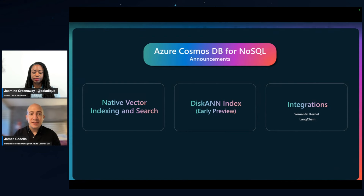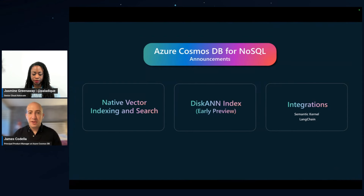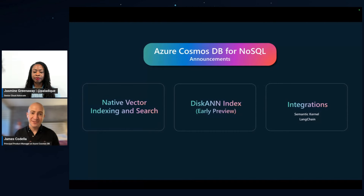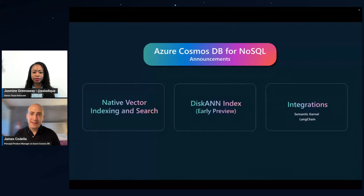At Build this year, we announced several exciting things for Azure Cosmos DB for NoSQL. First is native vector indexing and search — built into the core Cosmos DB for NoSQL engine. This is not a plug-in and not something that sits on top of the database; it's built into the core database structure itself, and it's available in preview. We also announced DiskANN index early preview. This will offer vector search and indexing at tremendous scale. We also have integrations with your favorite large language model orchestrators like Semantic Kernel and LangChain.